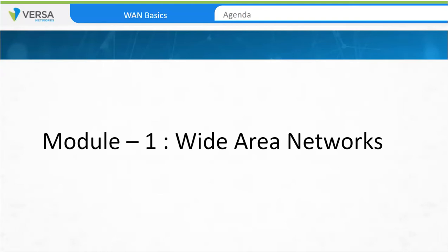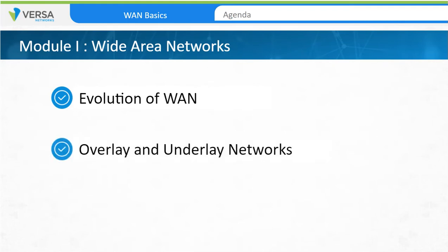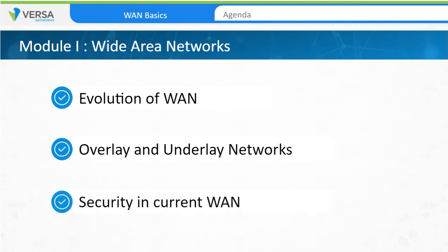Welcome to Module 1 of the Versa Essentials Training. In this module, we'll review the WAN, or Wide Area Network. We'll look at how the WAN has evolved over the last five decades and key problem areas that network administrators face. We'll also look at overlay and underlay networks and describe the differences. Overlay network architectures are the fundamental technology of next-generation software-defined WAN designs. We'll also look at how security is implemented in today's WAN designs.